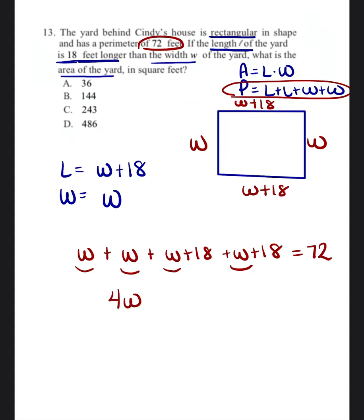And then we're going to go ahead and combine the constants or the numbers that are by themselves. And 18 plus 18 is 36. And we're just going to bring down the 72.